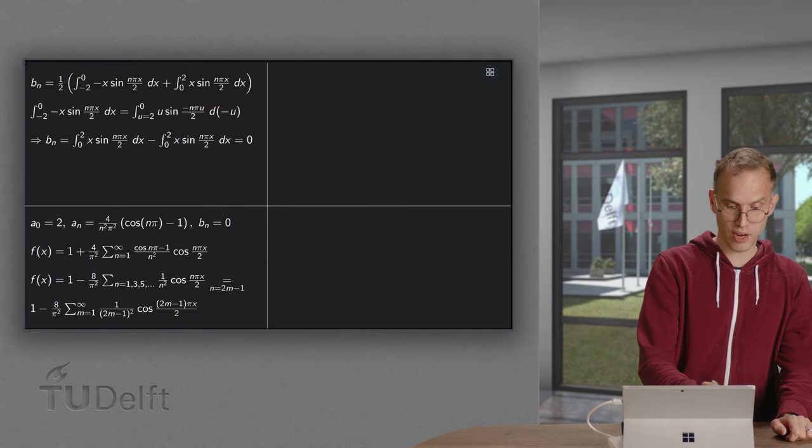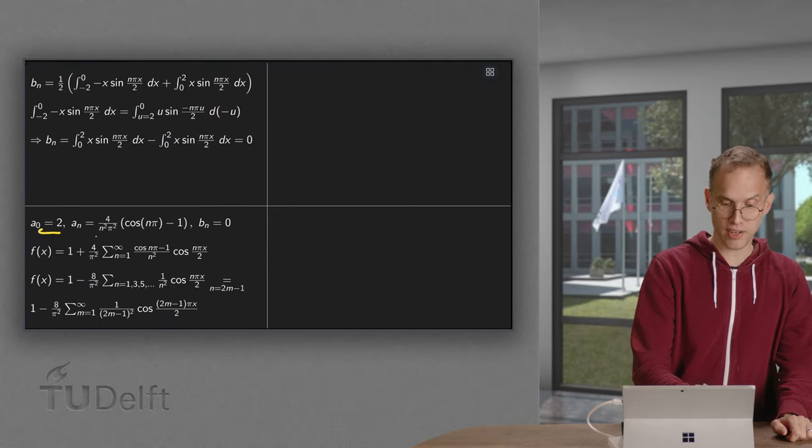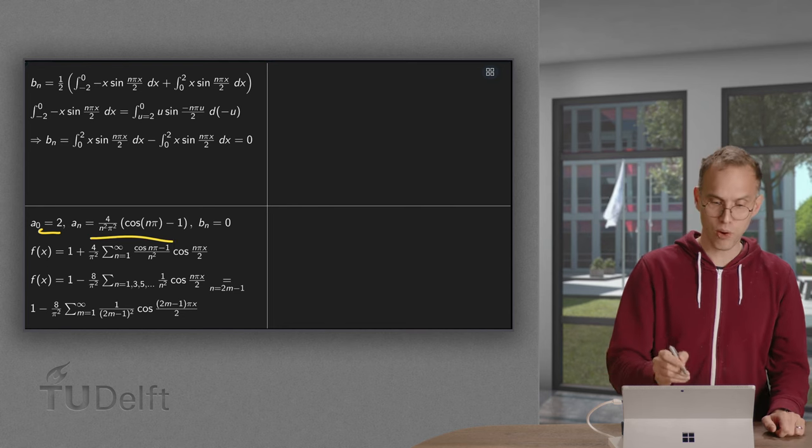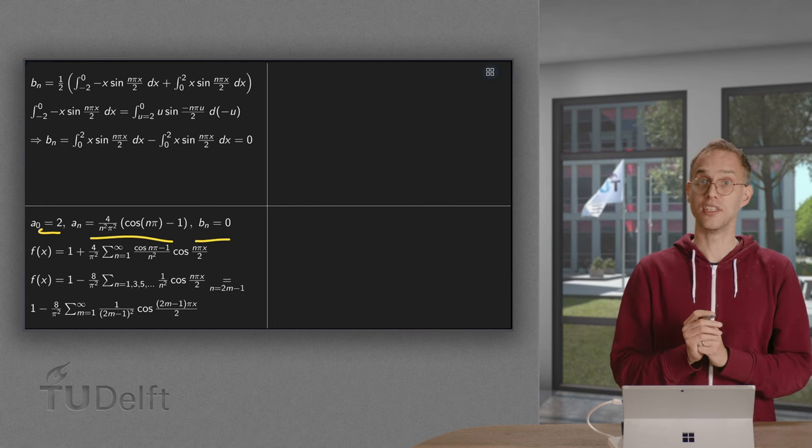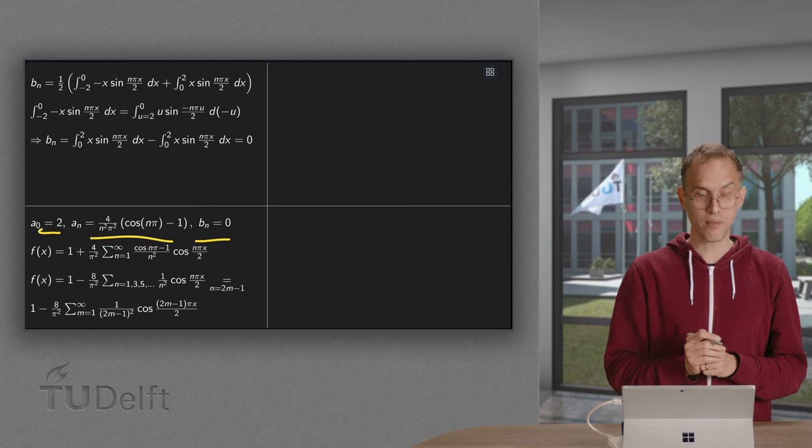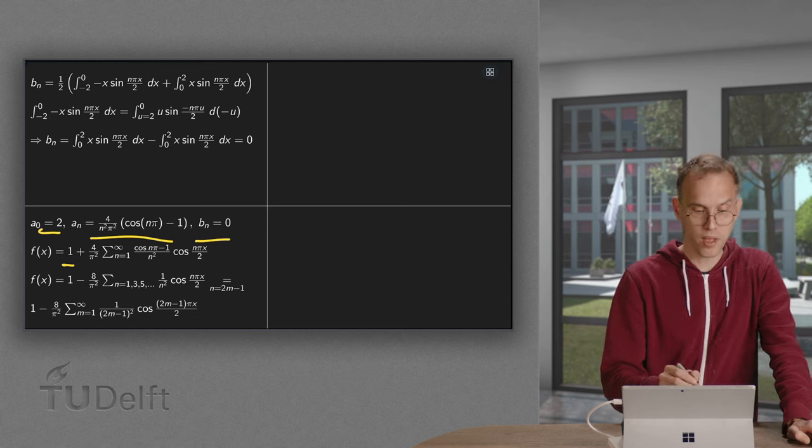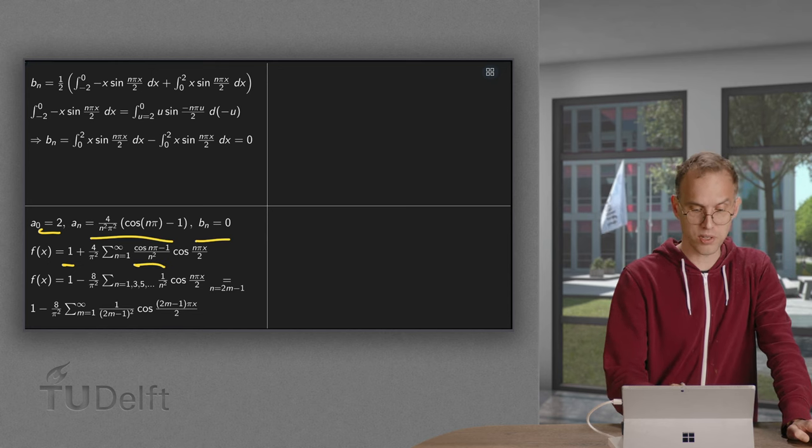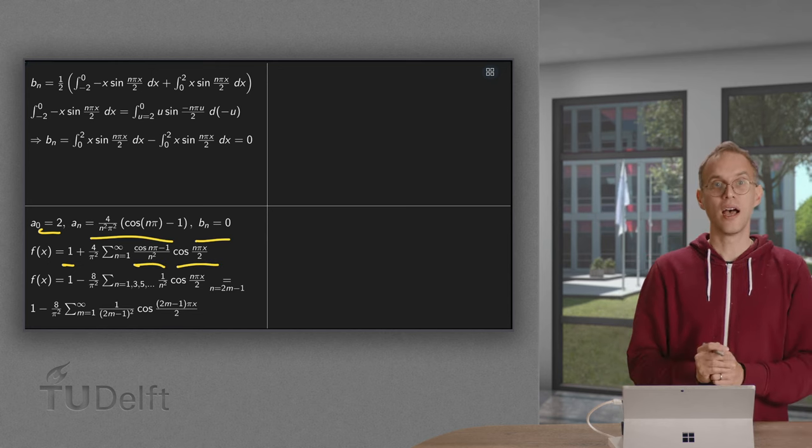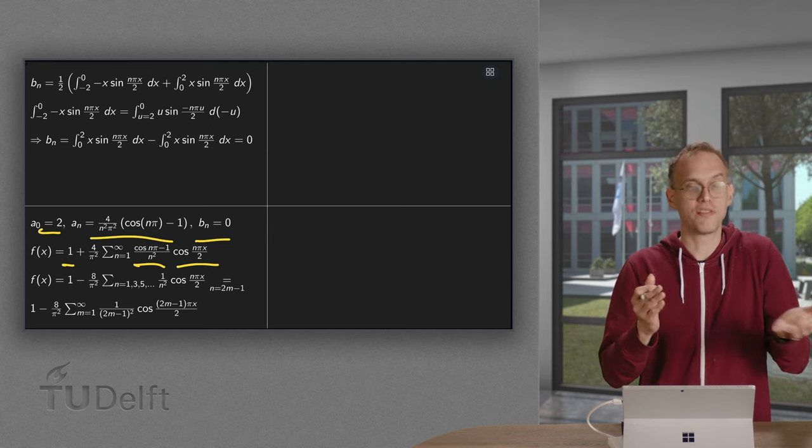Summary: we had our a0 equals 2. Here we had our an, which were slightly awkward. And all our bn's are 0. Then we can write our f of x. F of x equals a0 over 2, so a 1, plus awkward terms times the cosine. This is okay as a final answer.